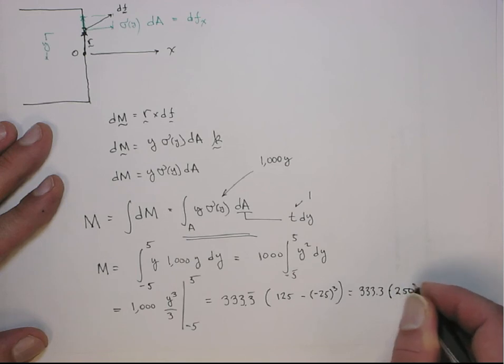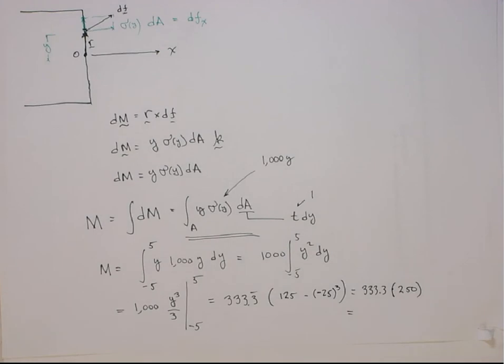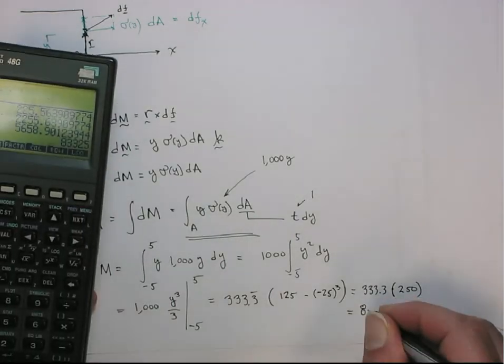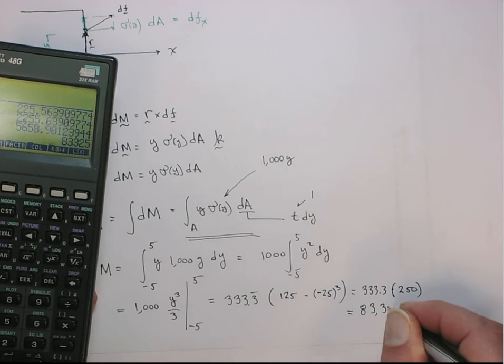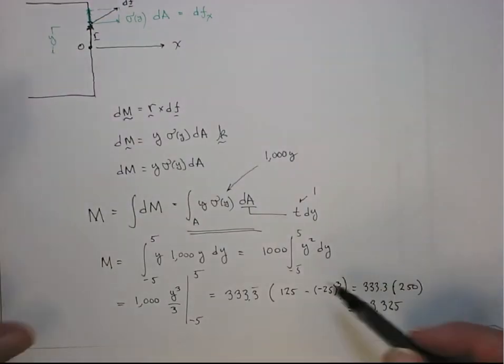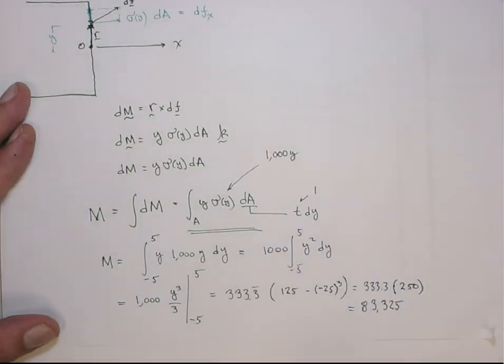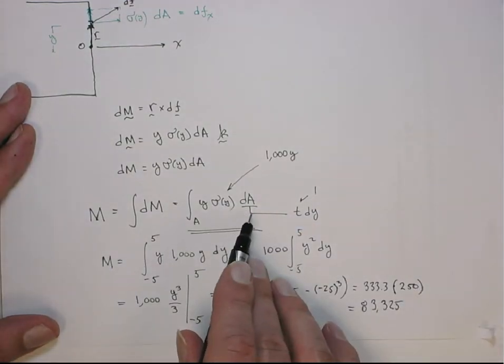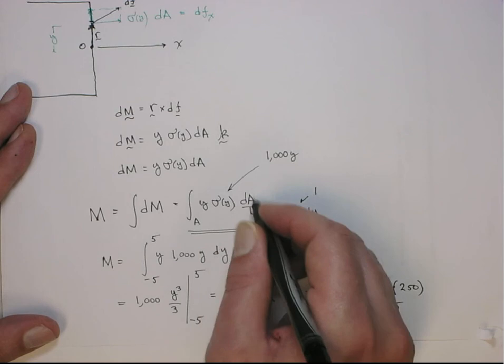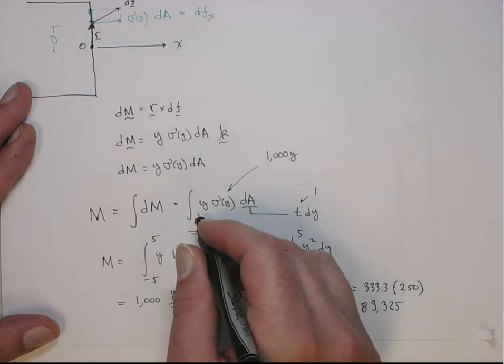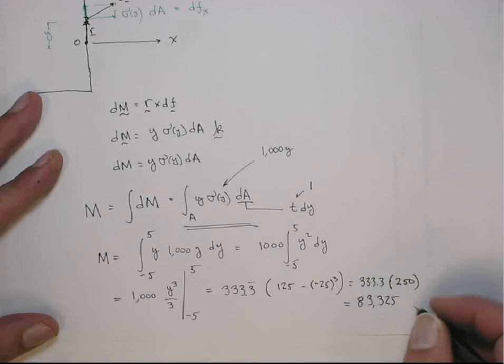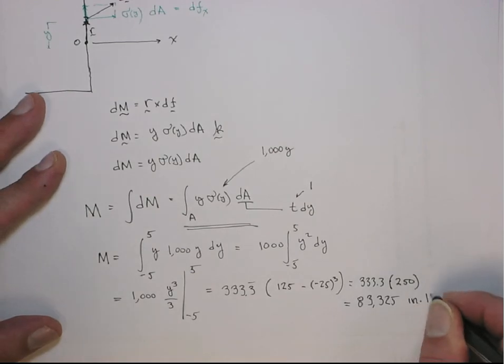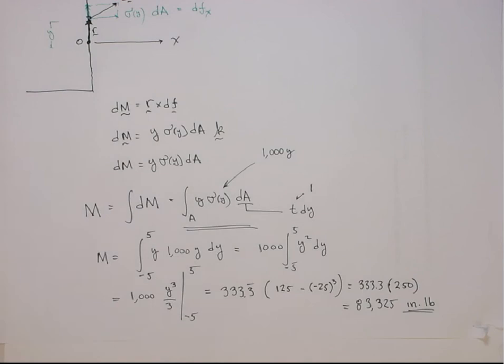And that ends up being 83,325. The units, if you go through, this was pounds per inch squared, here's area that's inch squared, so that gives me pounds. And then here is length, so this gives me inch-pounds. So that's the total moment.